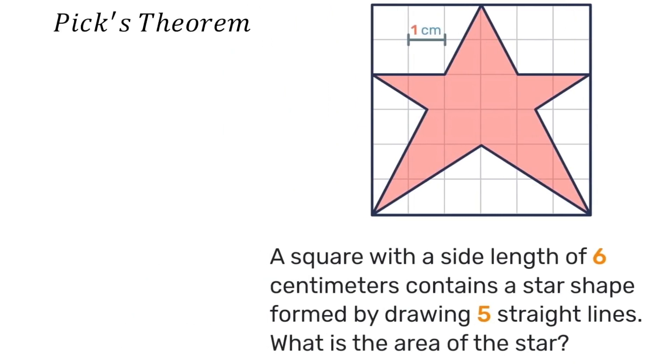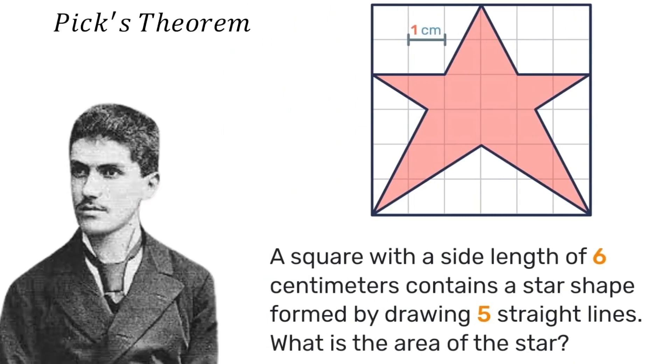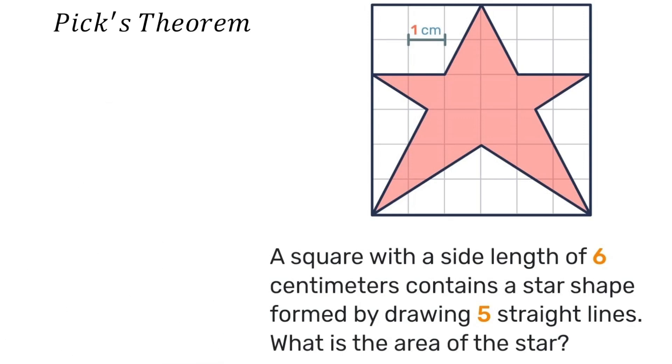The first way is using Pick's theorem invented by George Pick. His formula says that the area A is equal to I plus B over 2 minus 1 where I is the number of internal lattice points which means it's the number of grid points that intersect wholly inside of the star.